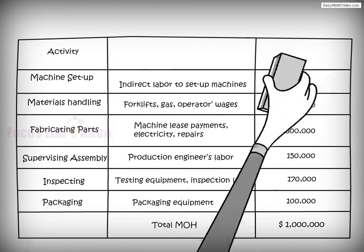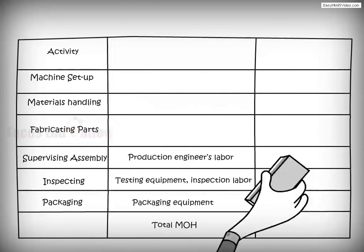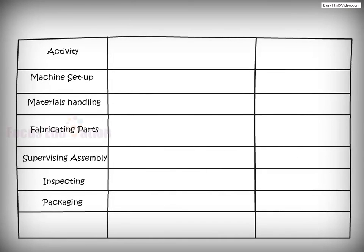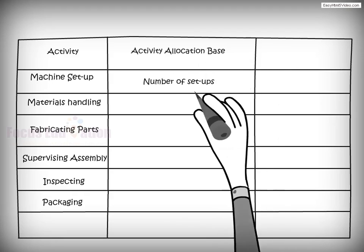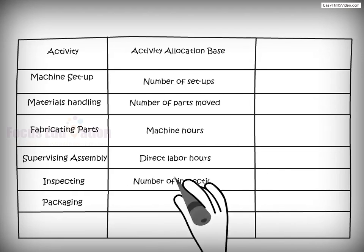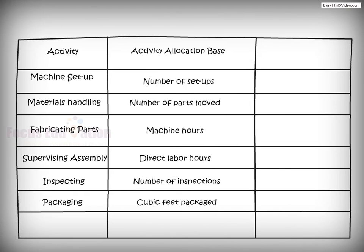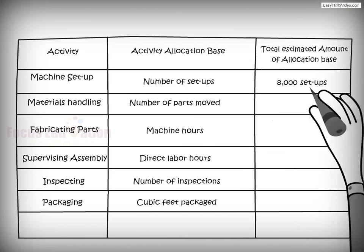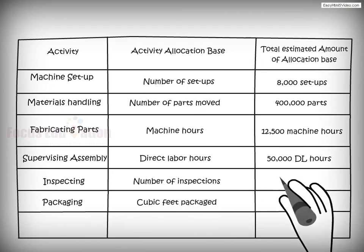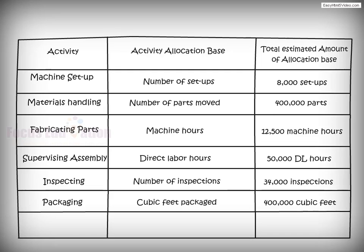For the second step, the managers need to identify a cost driver, which in turn becomes the allocation base for each activity. This helps them estimate the total amount that will be used during the year. For example, the company selects number of setups as an allocation base for machine setup and estimates 8,000 setups as the total amount that will be used during the year.